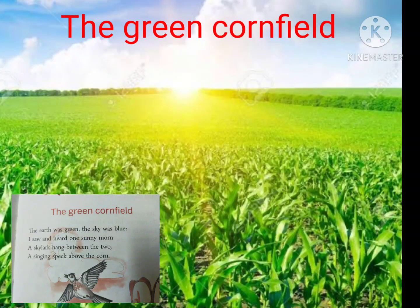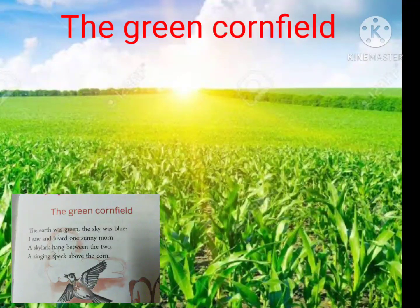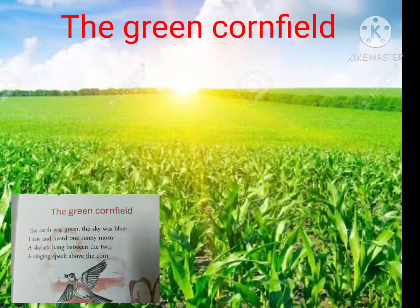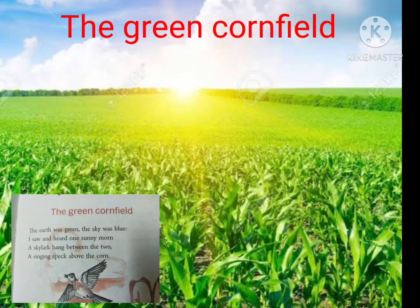So you can see it is morning time — a beautiful sunny morning in the cornfield, where the cornfield is completely green and the sky is completely blue, and the sun is shining brightly. At that time, a skylark is hanging between the two. This poem is about the view that the poet Christina Rossetti saw when she was passing by the green cornfield. So what did she see and what did she hear?